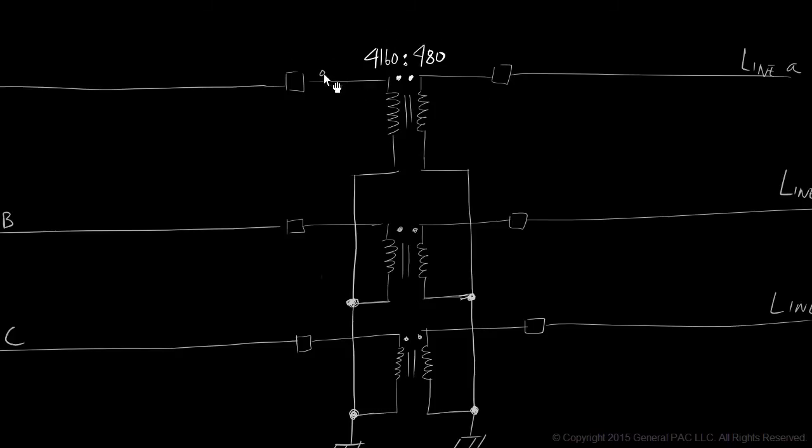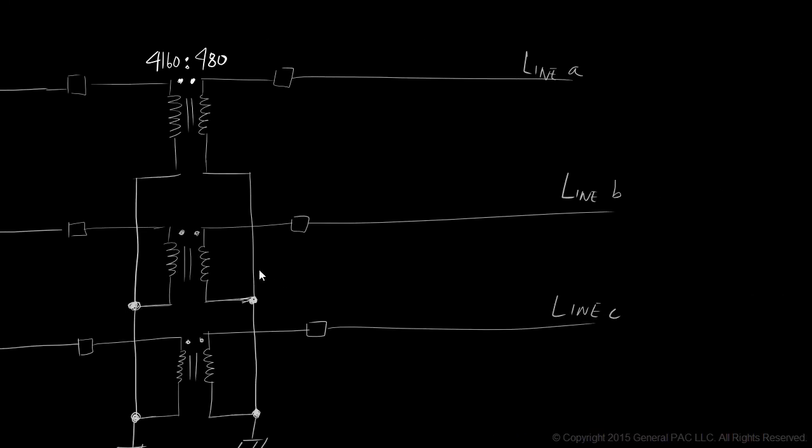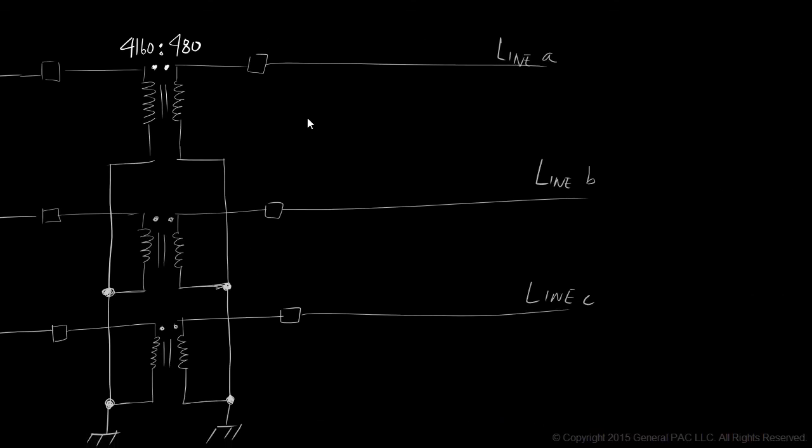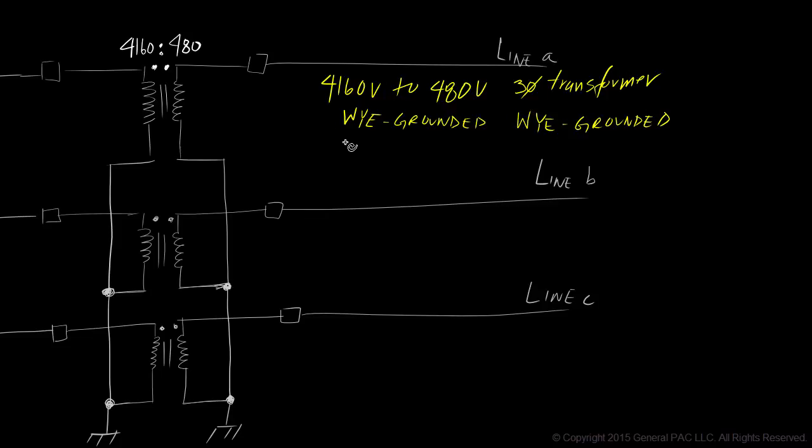This, my friends, is our YY-connected three-phase transformer. And if we were to describe this particular transformer connection to someone, we'd say that we have a 4160 to 480 volt three-phase transformer. It has a Y-grounded-Y-grounded connection. Both the primary side and the secondary side is solidly grounded with no neutral impedance.